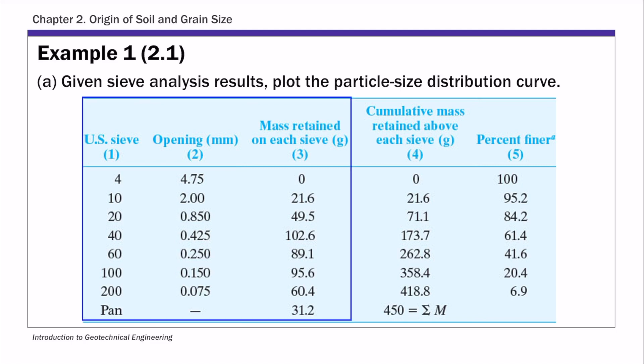Specifically, the first three columns are basically the raw data. So you have the sieve number, the corresponding opening size, and the mass retained on each sieve. That's basically what you get from sieve analysis. In columns four and five, these two columns are calculated. So basically using the raw data, you calculate the cumulative mass retained above each sieve in column four, and then get the percent finer.